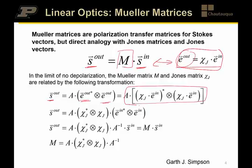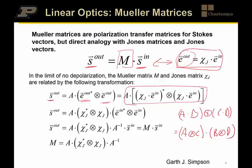Well, there's a very useful relationship of A times B, Kronecker C times D equals A, Kronecker C times B, Kronecker D. If we use that relationship in here, then we can rewrite that equation in this form. And once it's in this form, we can now substitute for the incoming electric fields.